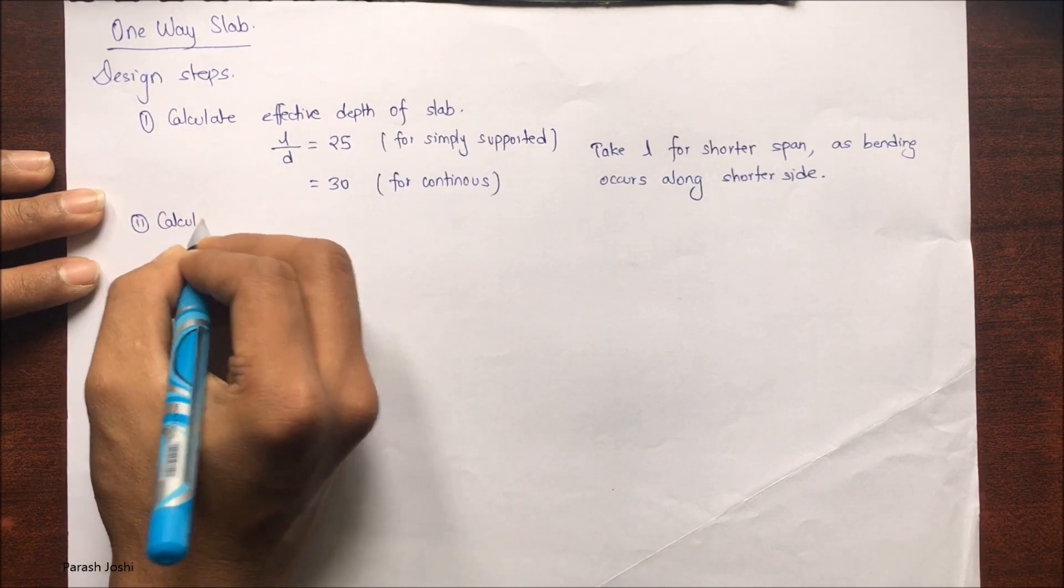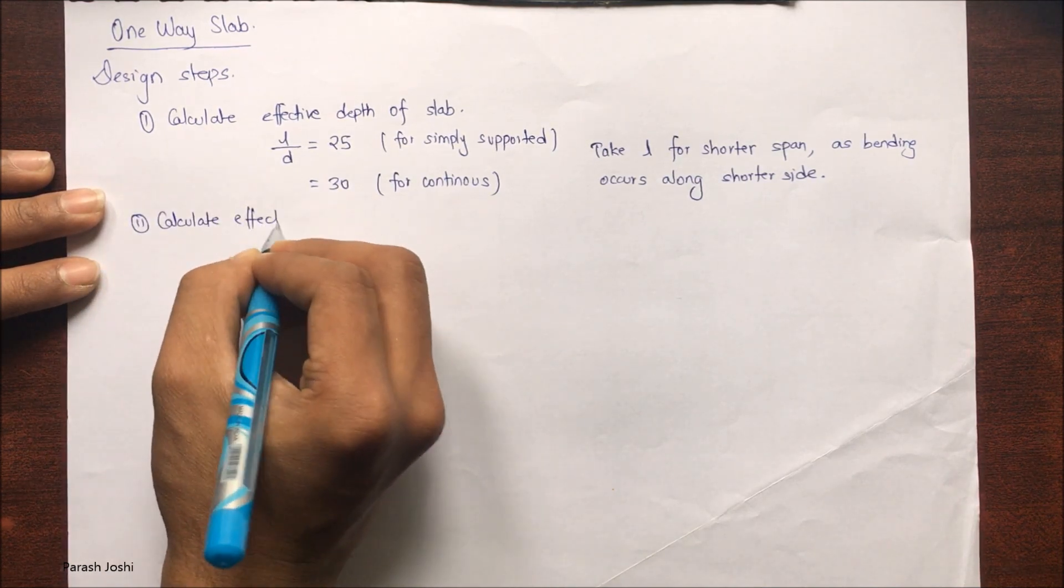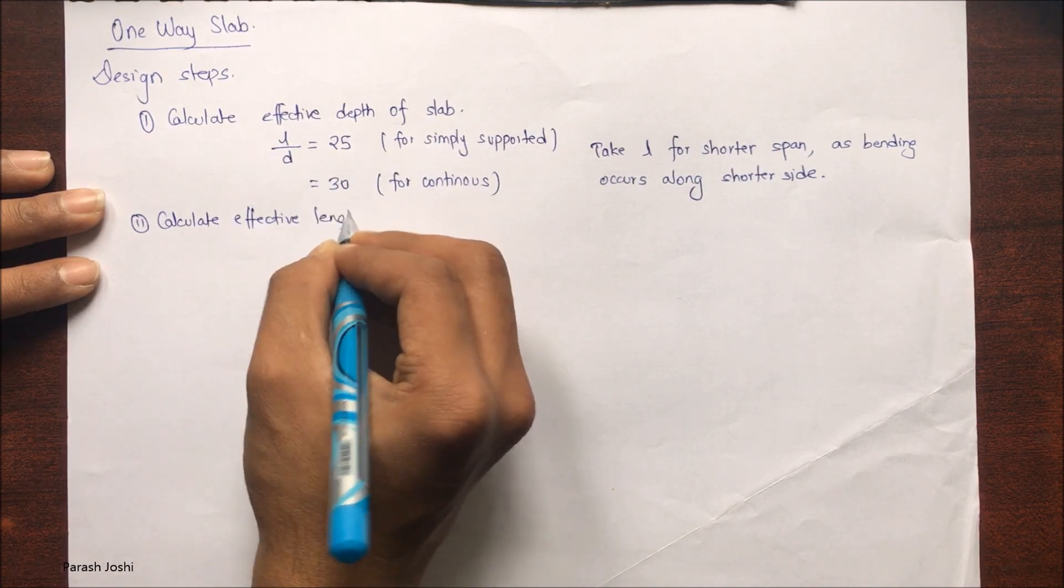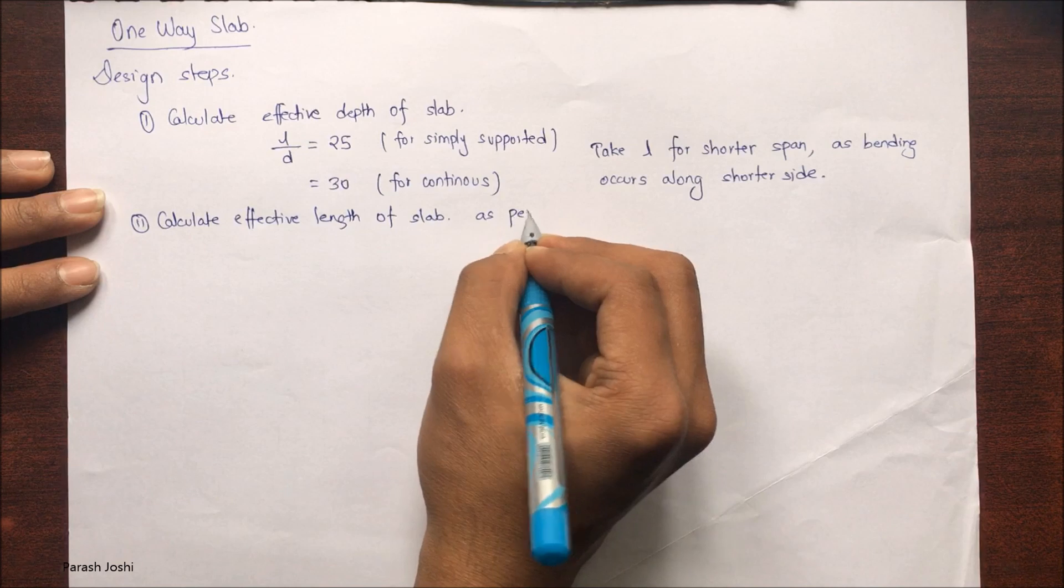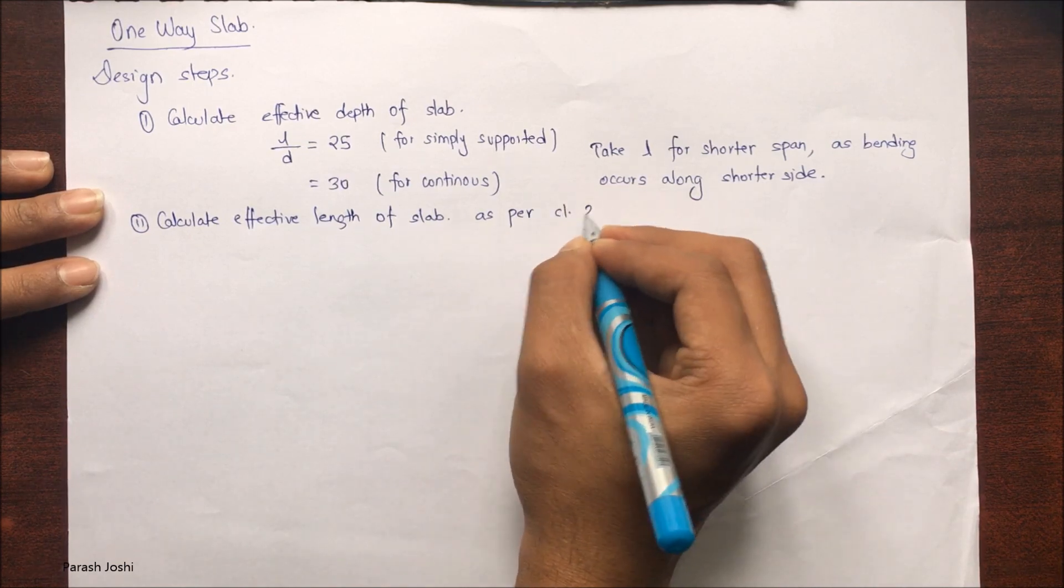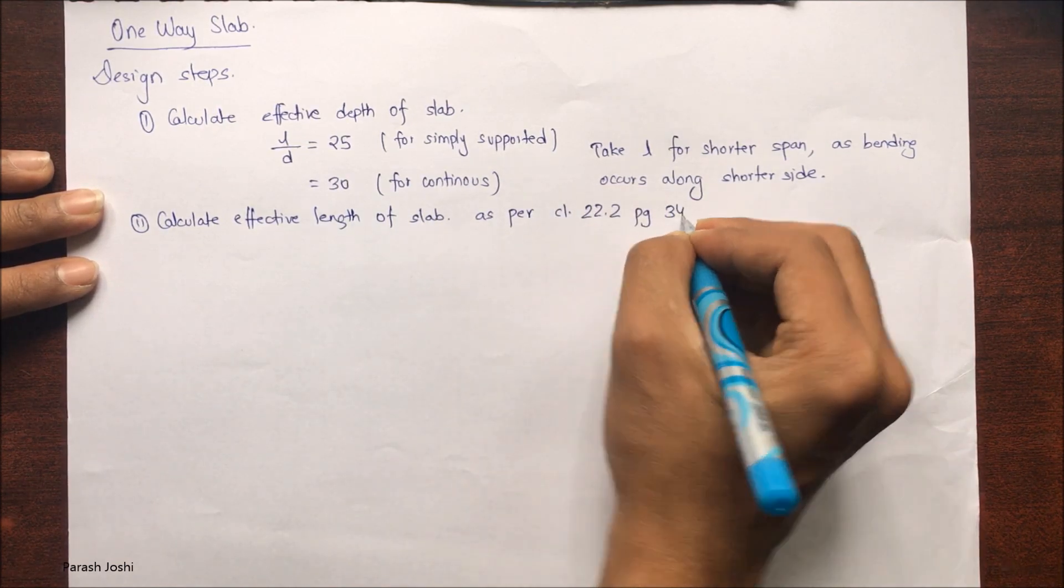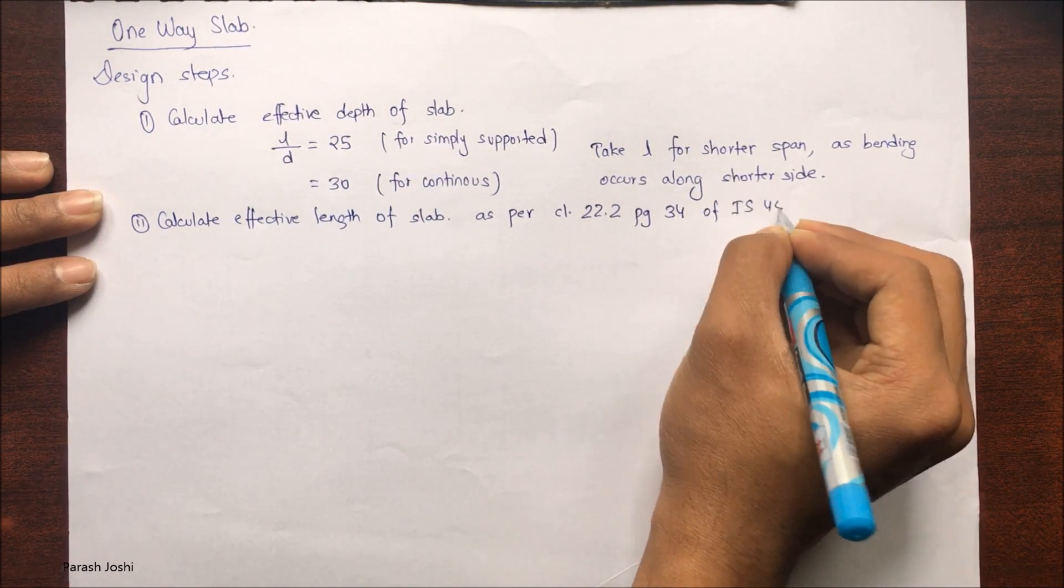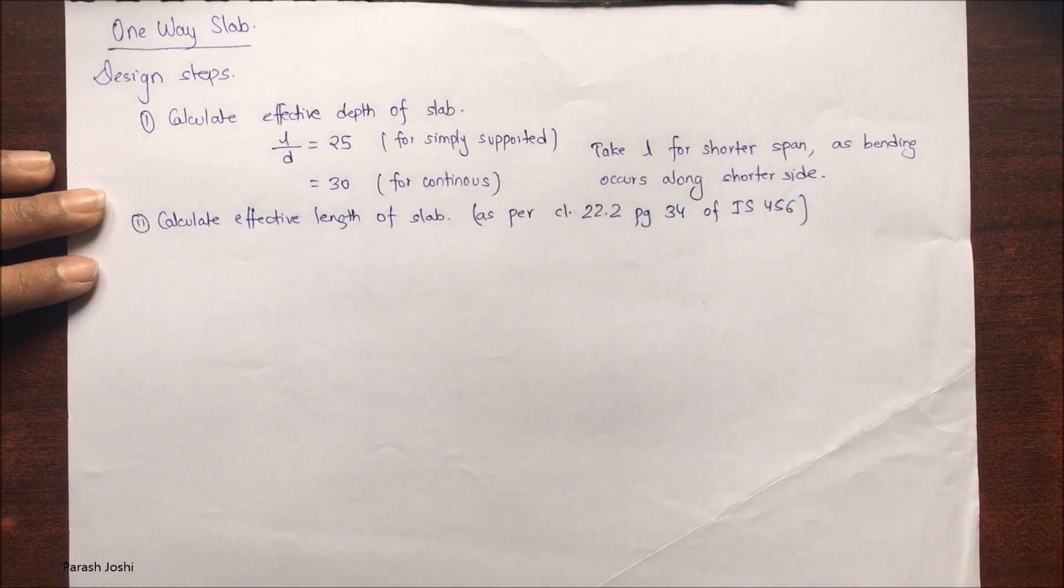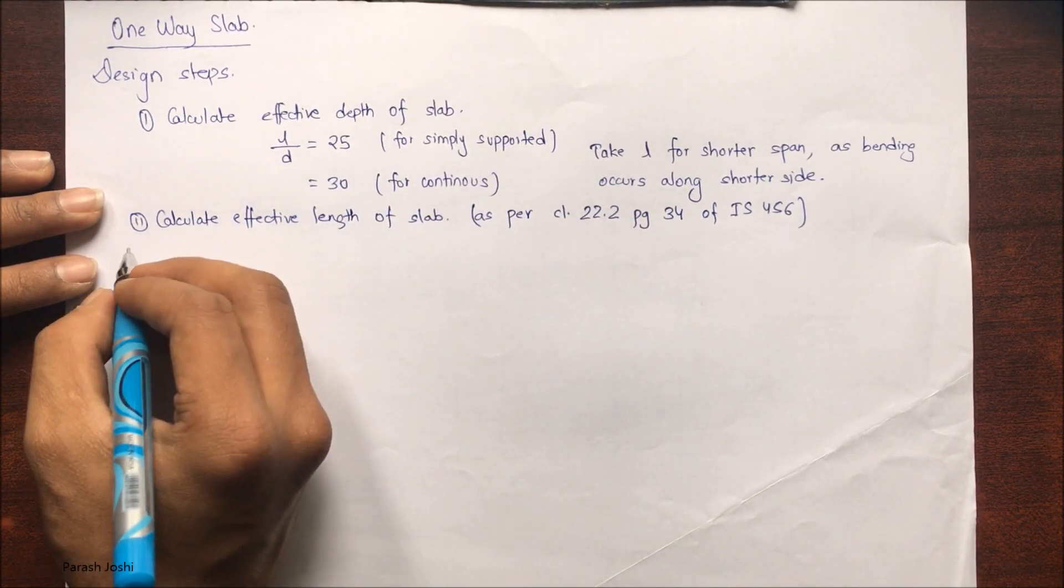Now the second step is to calculate the effective length of the slab. The length in step one is the total length or clear span, and this is taken from clause 22.2 page 34 of IS 456-2000. The effective length is calculated.